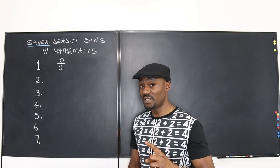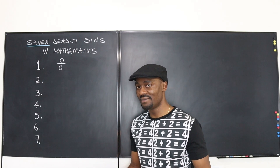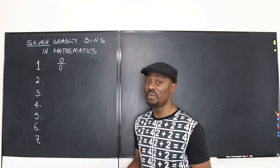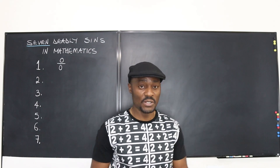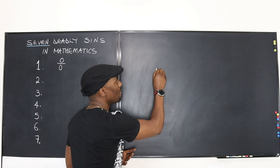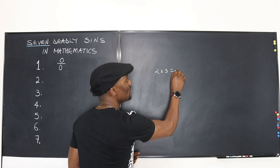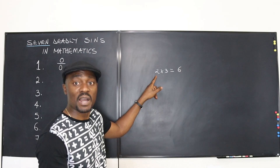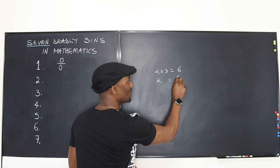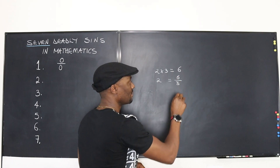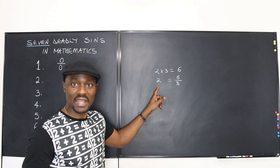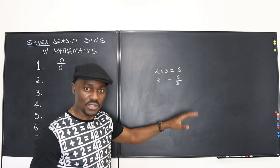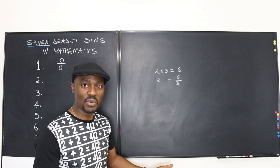Let's start with the first sin — the most common sin. It is getting zero over zero, and I want to explain to you why this is indeterminate and unreasonable. If I have two times three, I'm going to get six. So if I want my two back, all I have to do is divide both sides by three. I can say my two is equal to six divided by three. I've got my two back. Whatever number I use, as long as I follow the simple law of multiplication, I'll always get my number back.